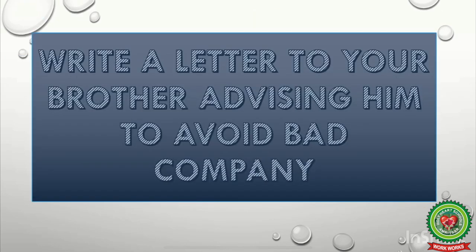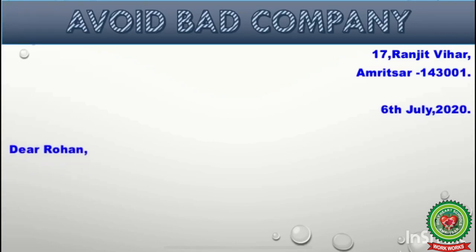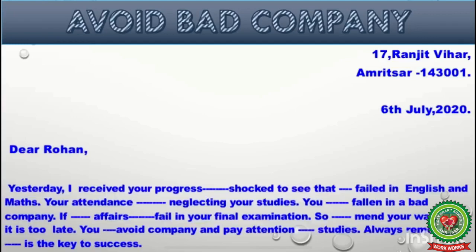Now I am going to discuss letter number one with you: write a letter to your brother advising him to avoid bad company. You have to mention the address like: 17 Ranjit Vihar, Amritsar, 143001. Now leave one line and write down the date: 6th July, 2020. Then the turn is of salutation — write down 'Dear Rohan.'